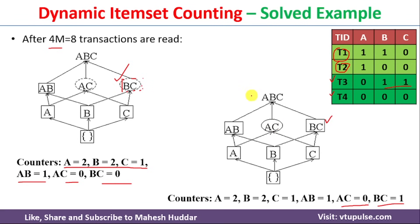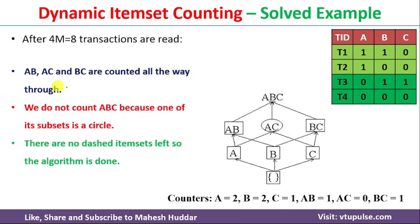Because AC is not a frequent item set, we cannot consider ABC. For ABC to be a frequent item set, all its subsets — A, B, C, AB, BC, and AC — must be frequent, but AC is not. There are no more dashed item sets remaining in the lattice, so the algorithm stops. The five frequent item sets found are A, B, C, AB, and BC.